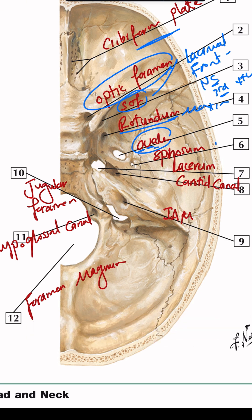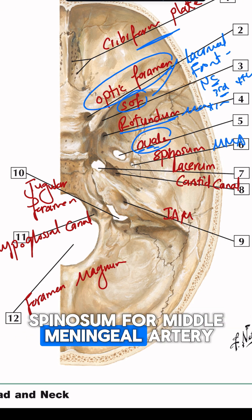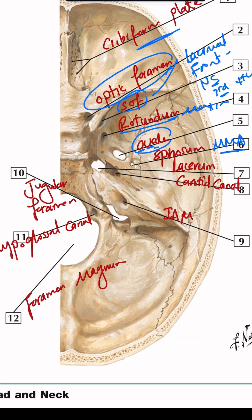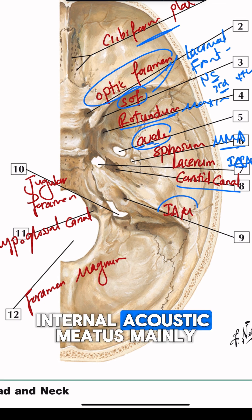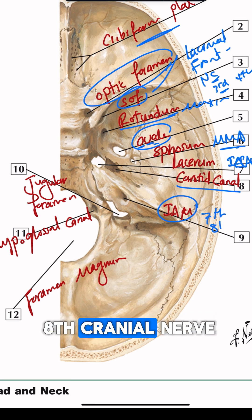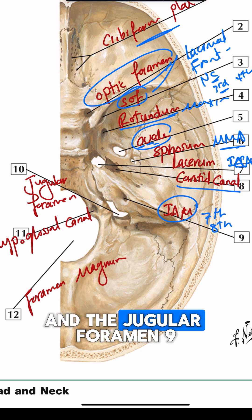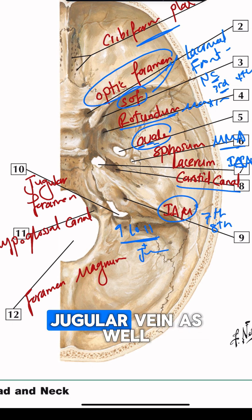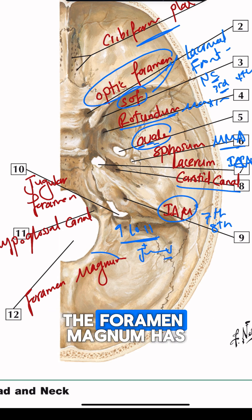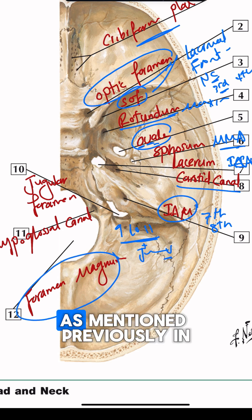Foramen spinosum is for the middle meningeal artery. Foramen lacerum is for the internal carotid artery. The carotid canal is for the carotid artery. The internal acoustic meatus contains mainly the seventh and the eighth cranial nerves. The jugular foramen contains cranial nerves nine, ten, and eleven, in addition to the jugular vein as well.